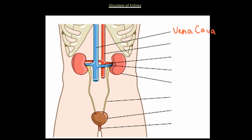Next we have the aorta coming down from the heart. It is the artery that carries oxygenated blood, marked in red. The aorta is going to split up into the renal artery, so blood goes into one kidney and the other kidney. It collects all of the metabolites coming out of the kidney, and they drain into the vein called the renal vein.